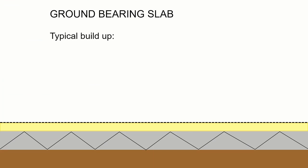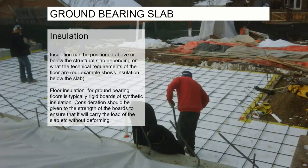On top of the DPM we install insulation. Because it's on the warm, dry side of the construction — above the DPM — we usually use rigid boards of synthetic insulation made from petrochemicals. The insulation must be able to take the load of the slab and the weight of people, furniture, and so on placed on top, so it has to be quite rigid, otherwise it will deform underneath the slab.